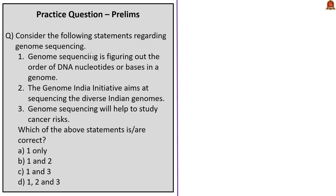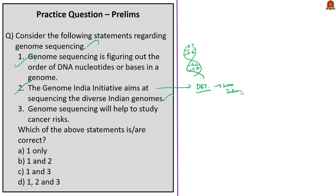The third question asks about genome sequencing. Statement 1 — genome sequencing determines the order of DNA nucleotides (adenine, guanine, cytosine, thymine) in a genome — is correct. Statement 2 — the Genome India Initiative aims to sequence diverse Indian genomes — is correct. Statement 3 — genome sequencing helps study cancer risk — is correct, as the project aims to develop cancer diagnostic tests. The correct answer is Option D: 1, 2, and 3.